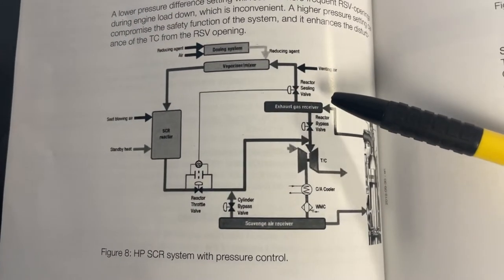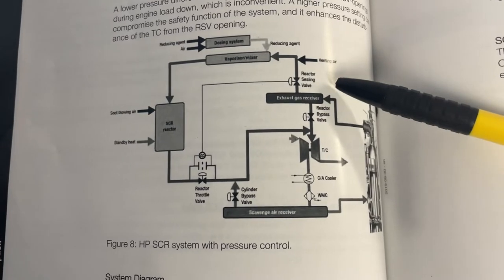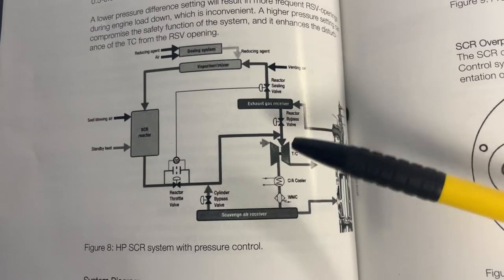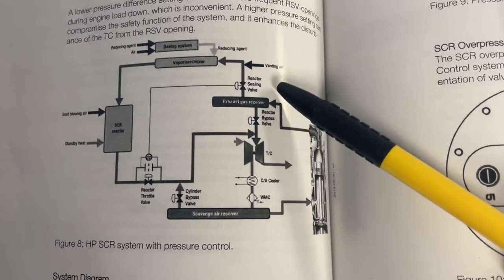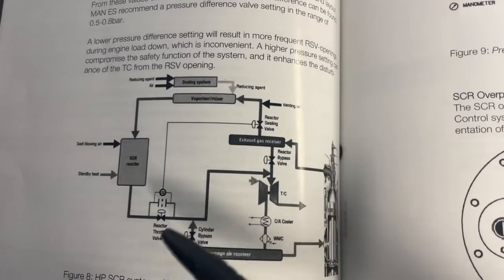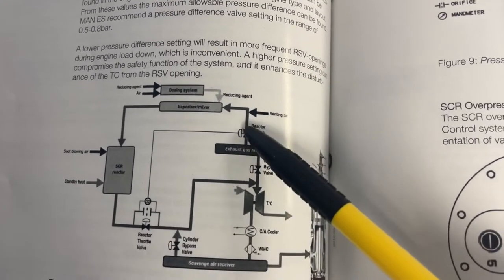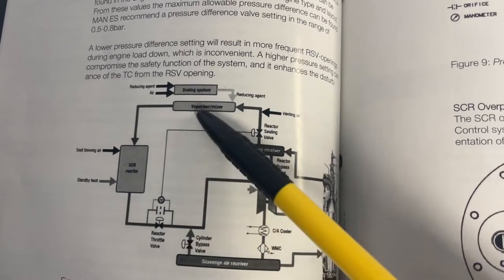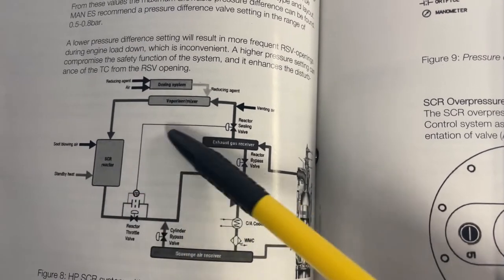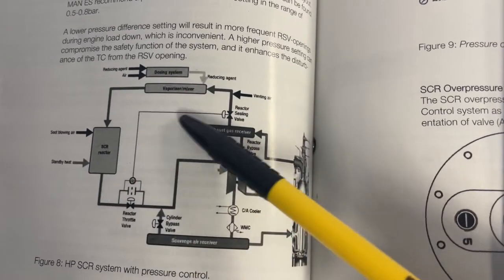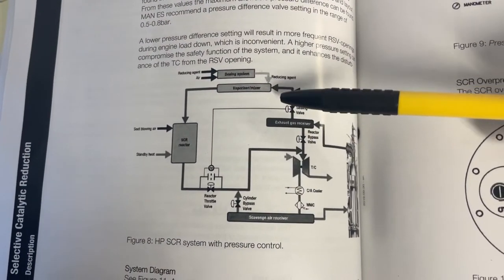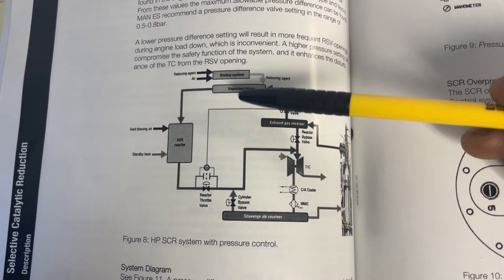This pressure difference control is only for SCR lines and SCR components. The SCR lines are the lines after the RSV and before the RTV — whatever lines are present in between are called SCR lines. Whatever components are present in this line are called SCR components.